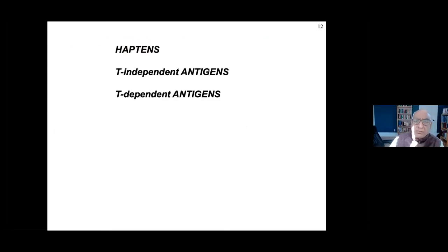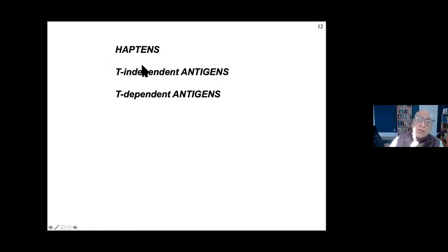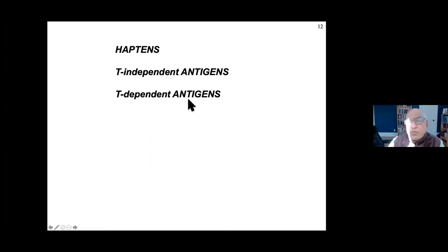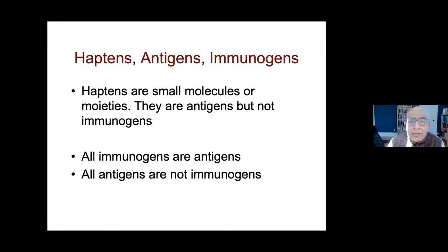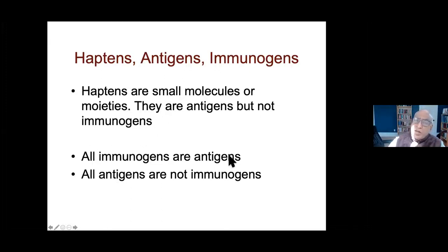Any antigen which has the same determinant repeated many times is called a T-independent antigen - it could be a lipid membrane, nucleic acid, polysaccharide, or a cell surface with the same protein repeated, but as long as it's multivalent it can cluster receptors and cause signaling. We divide antigens into haptens - small molecules that can't induce signal transduction - T-independent antigens (multivalent), and T-dependent antigens, which are always proteins because they need to be presented to T cells on MHC class 2 or class 1. All immunogens are antigens, but all antigens are not immunogens.